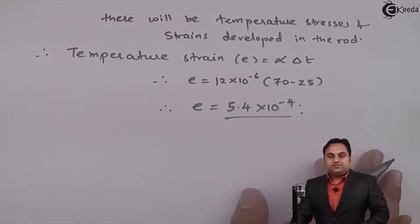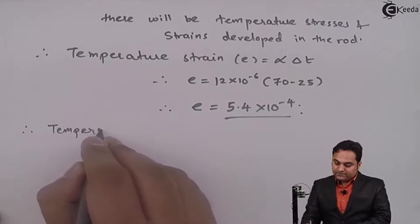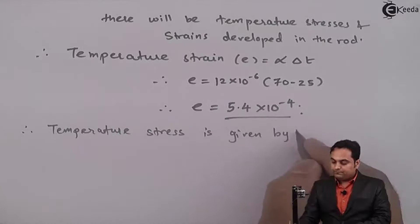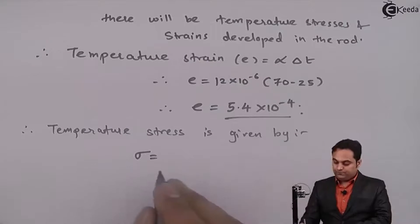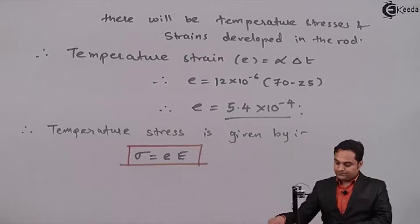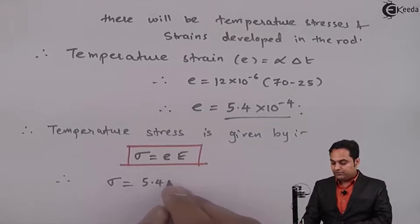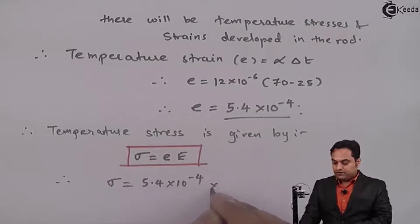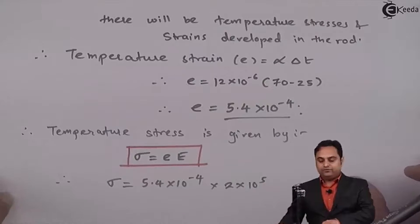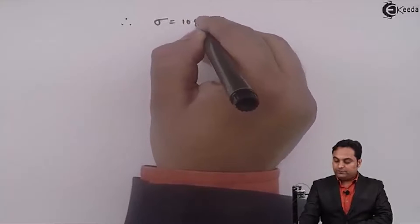After getting the value of temperature strain, the temperature stress is given by: sigma = strain × Young's modulus. Therefore, sigma = 5.4 × 10⁻⁴ × 2 × 10⁵, giving a stress value of 108 Newton per mm².